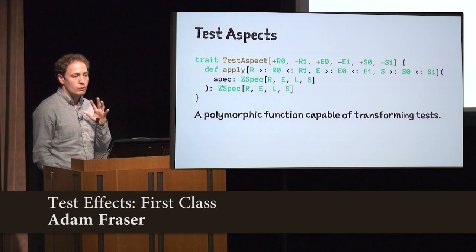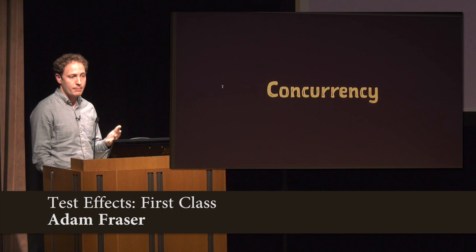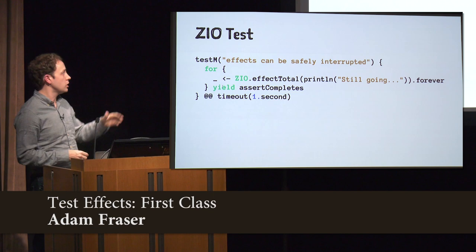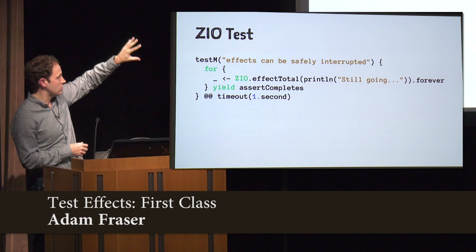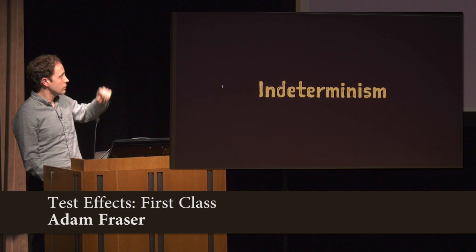Let's see how we can use some of these tools to turn those problems we were dealing with before into essentially one-liners. For concurrency: how do we timeout a test and actually stop the thing we want to stop? We just use @@ — our nice little syntax for applying test aspects — and apply TestAspect.timeout(1.second). This ties into ZIO's entire interruption mechanism. So when you run this, you're going to see print line a ton of times, and then after a second, you're going to see it stop. The test fails, and you go on with the rest of your tests.